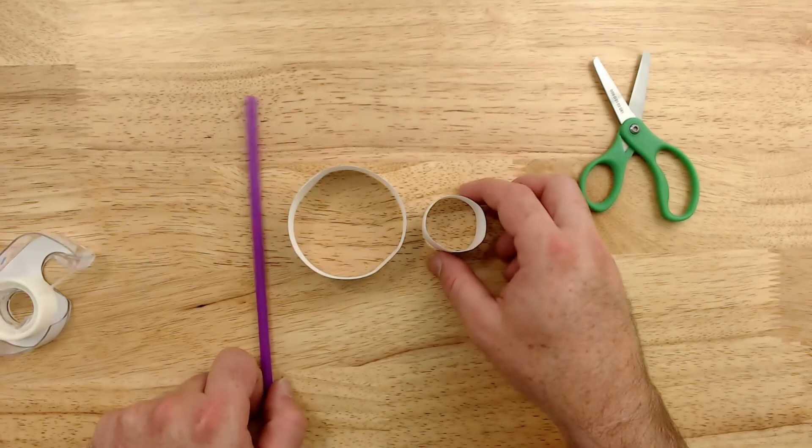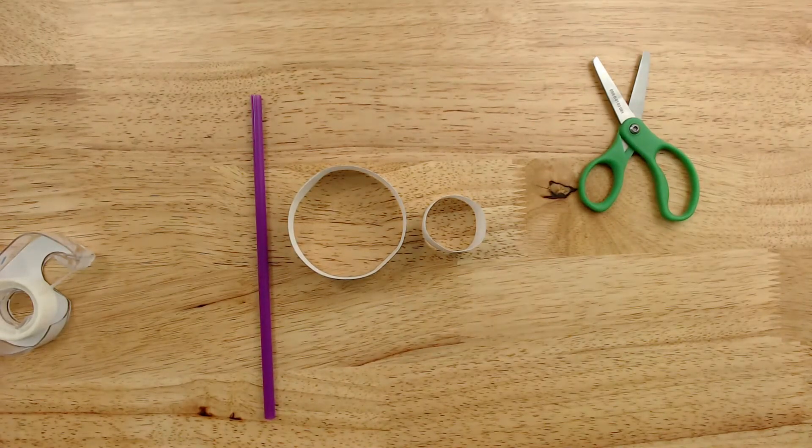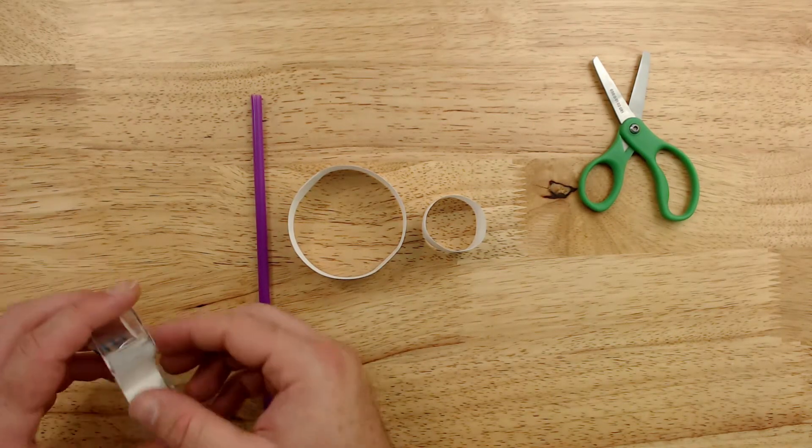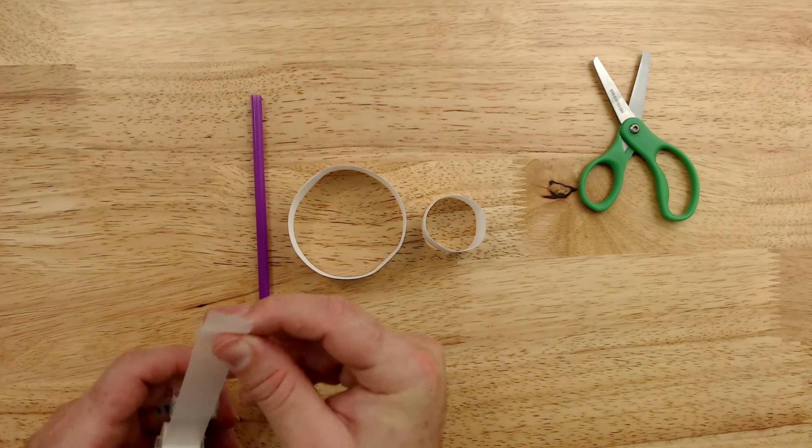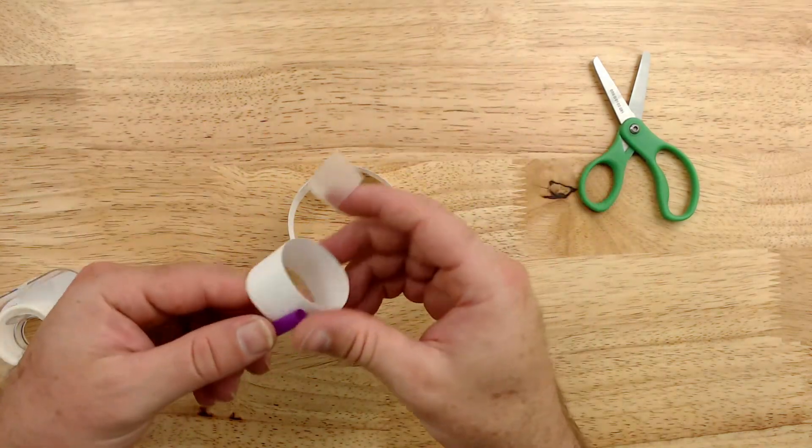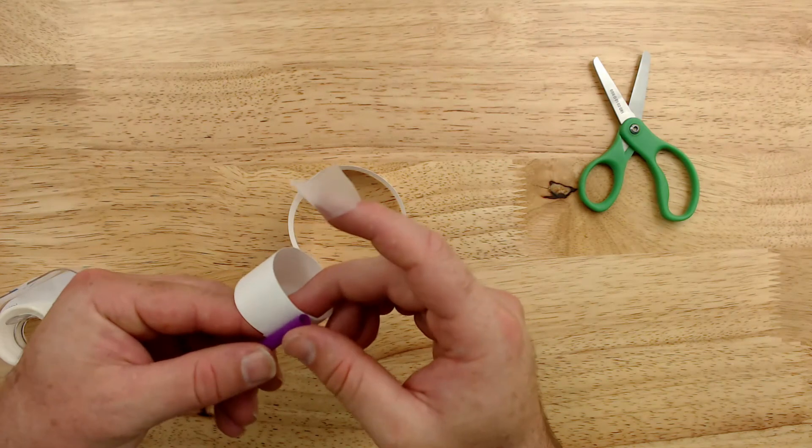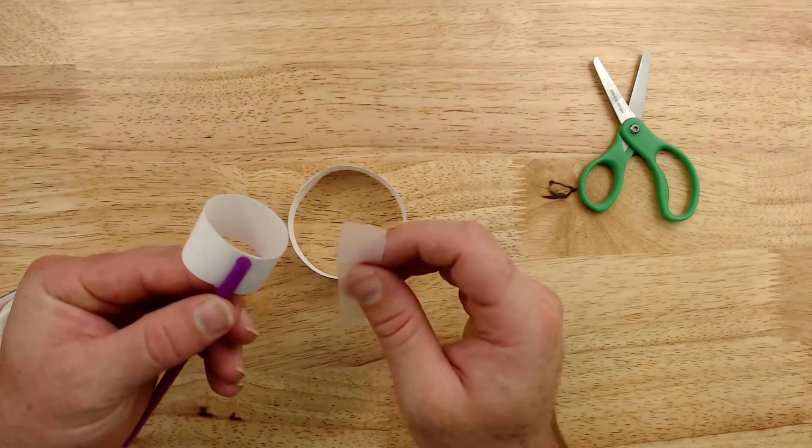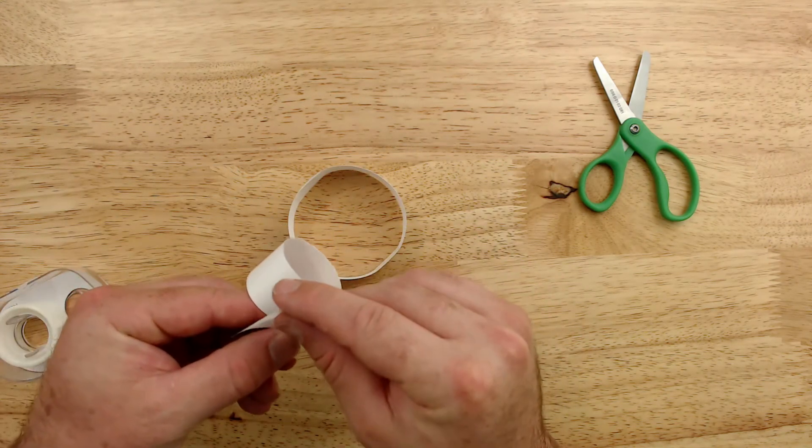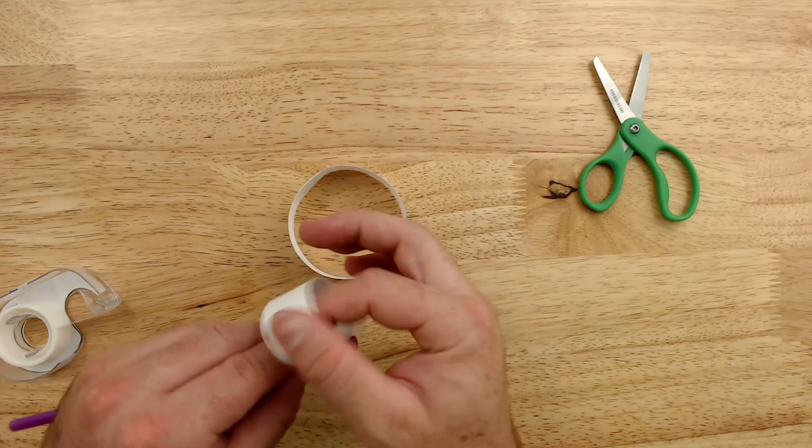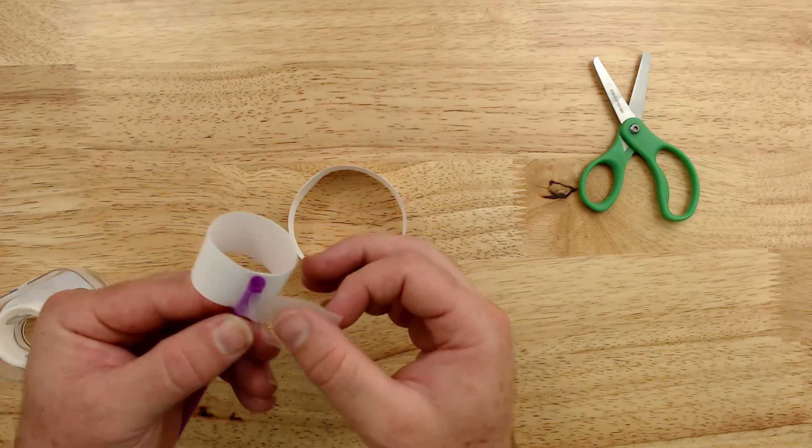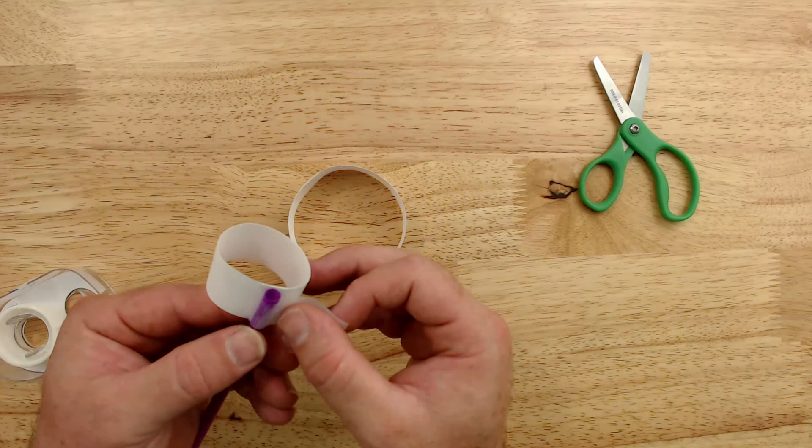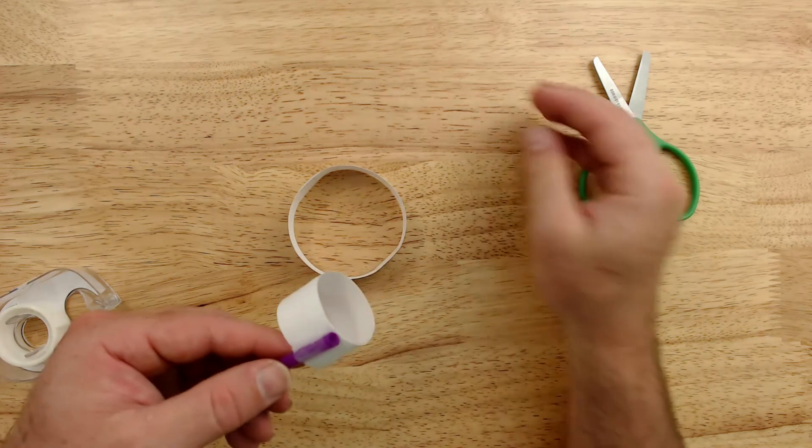So now we have a straw and two circles. Let's hook those together. We're going to take our tape and tape it on the seam at the end of the straw. At least for this one, you're going to get the chance to make more of these as part of your challenge.